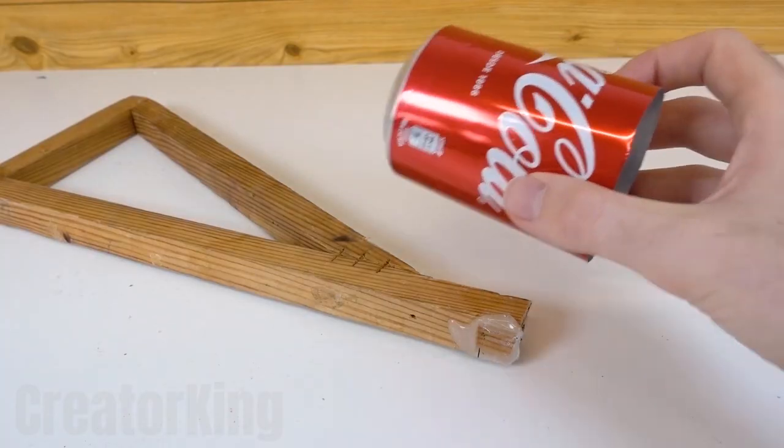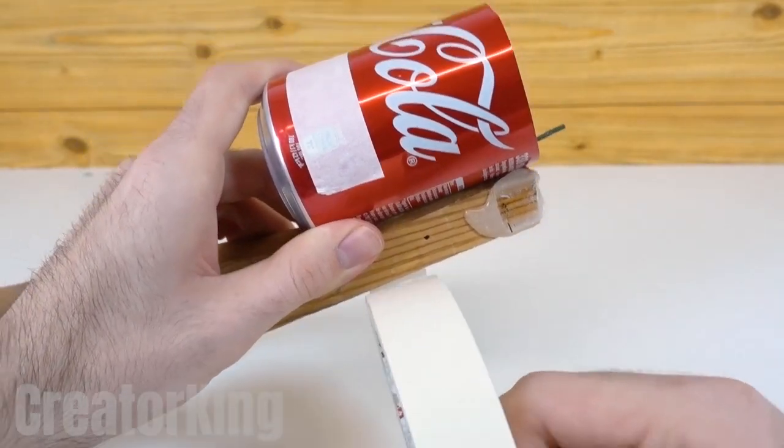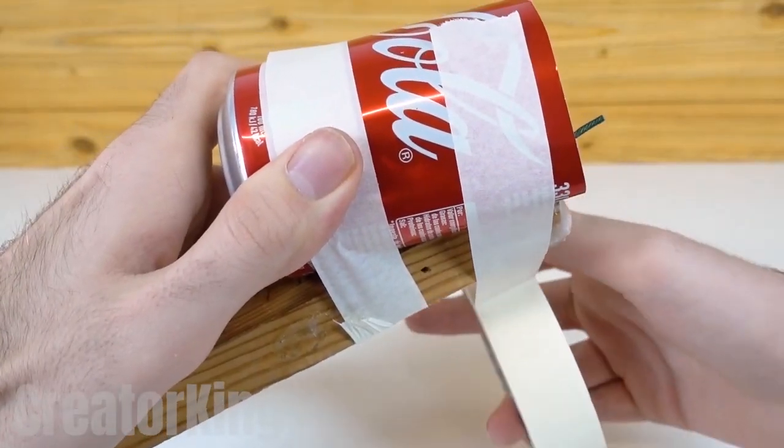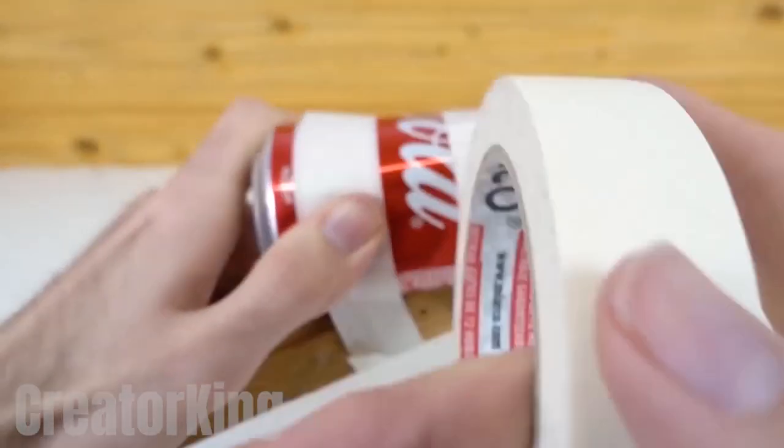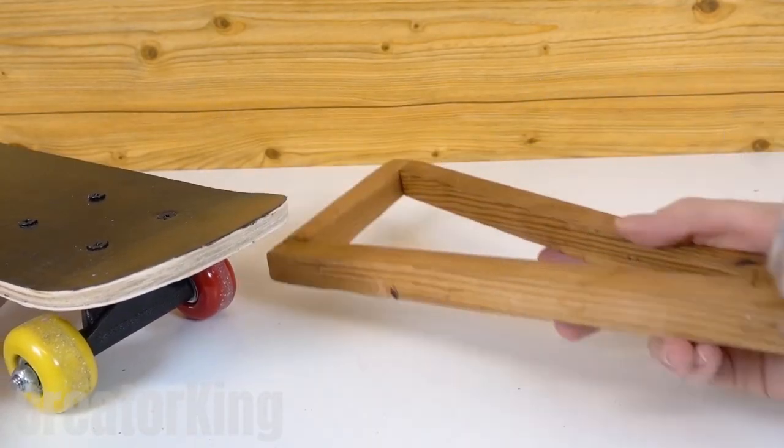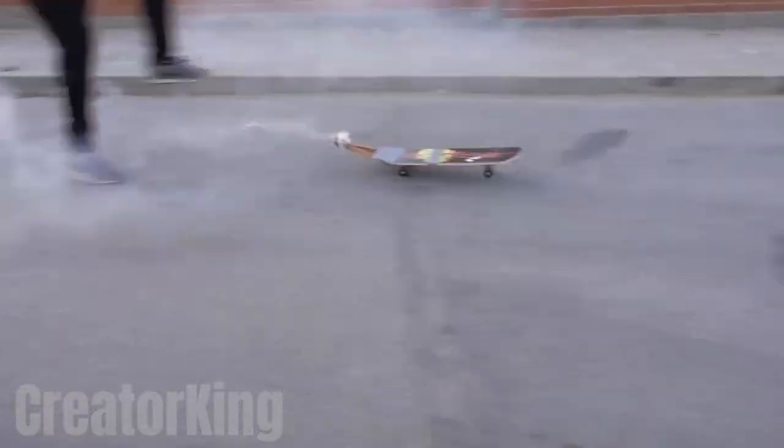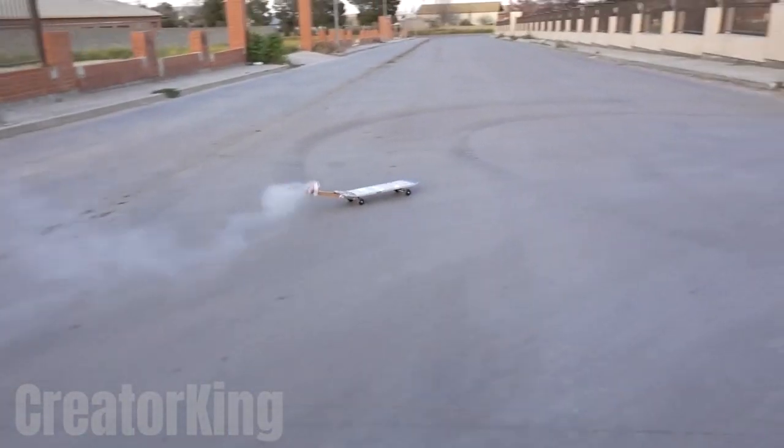Let's make some modifications to the skateboard so that we can mount our new toy. Attach the rocket to a wooden bracket using several rounds of tape. And then stick the square to the tail of the skateboard with the strongest thing you can find. Light it and give it a little push to move it away from you. What? Did you think I would get on it?